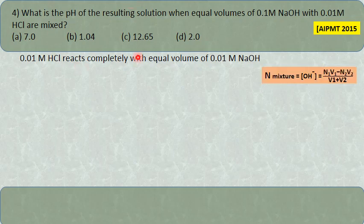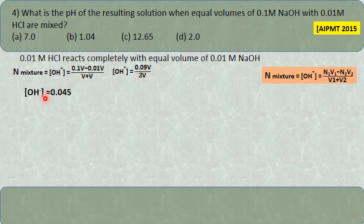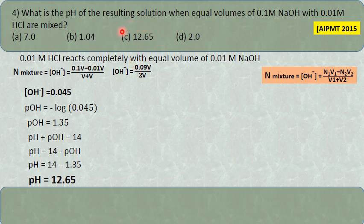Applying the formula: normality of mixture = (N1V1 minus N2V2) divided by (V1 + V2). Taking equal volume as V: (0.1V minus 0.01V) / (V + V) = 0.09V / 2V = 0.045. Hydroxyl ion concentration is 0.045. Calculate pOH, then pH = 14 minus pOH = 12.65.